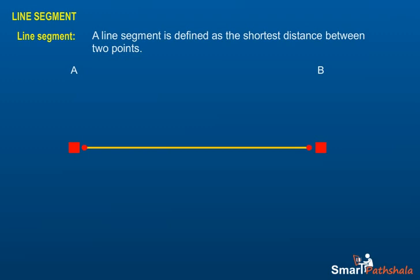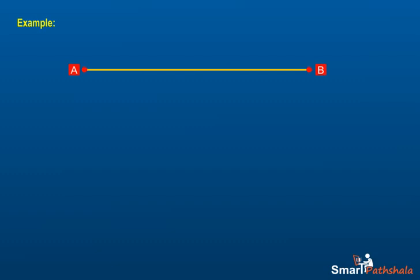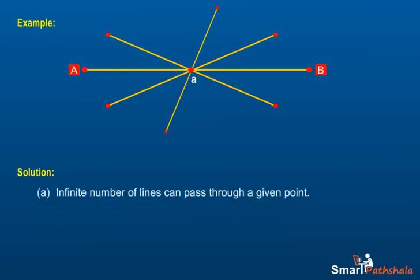Example: how many lines can pass through (a) one given point, (b) two given points? Solution: (a) infinite number of lines can pass through a given point. (b) Only one line can pass through two given points.